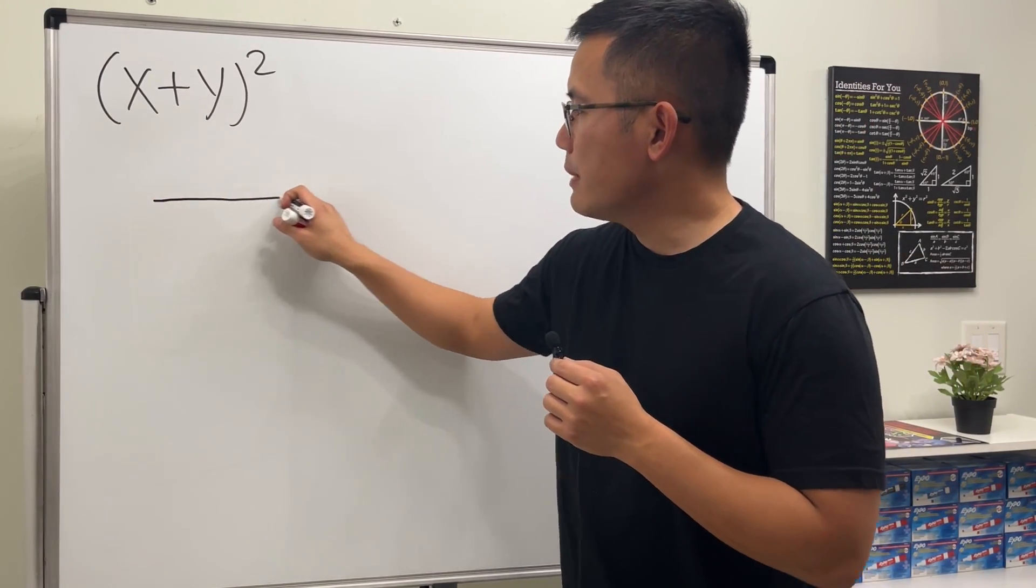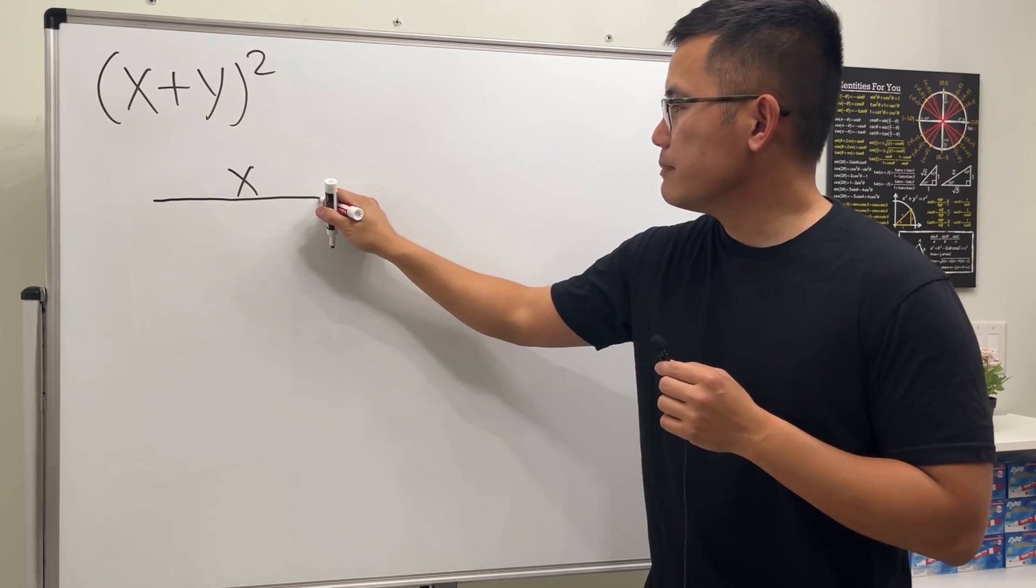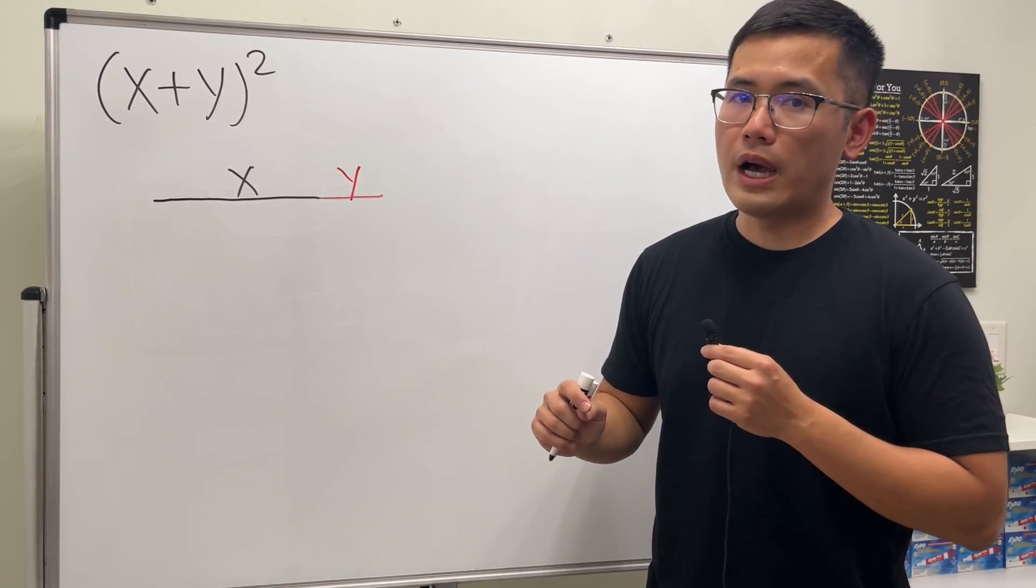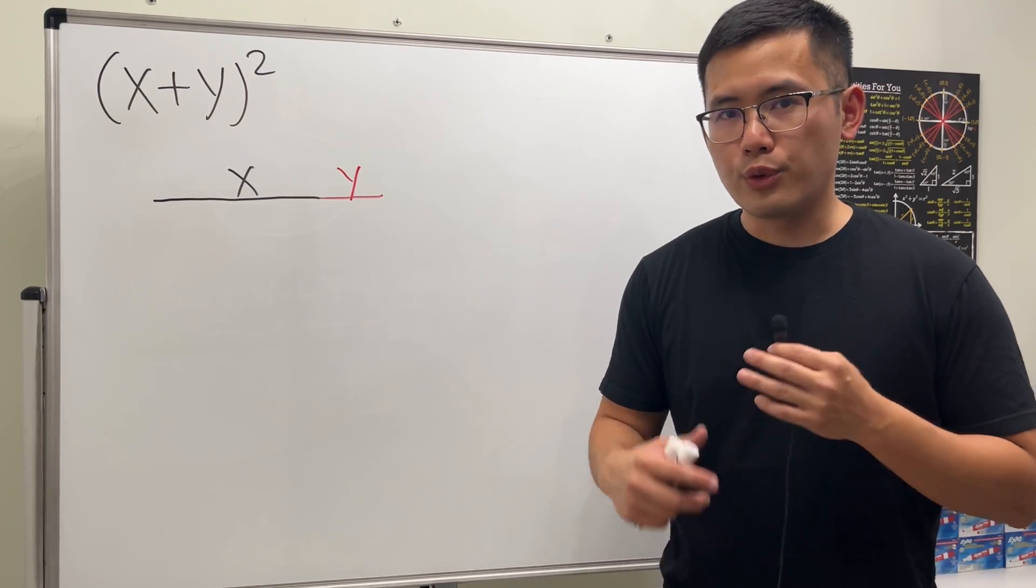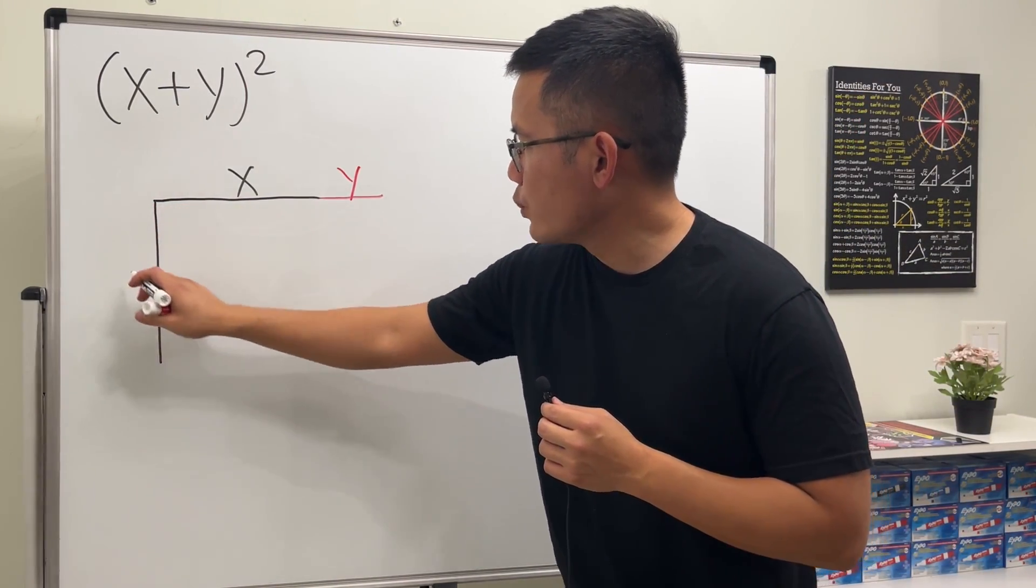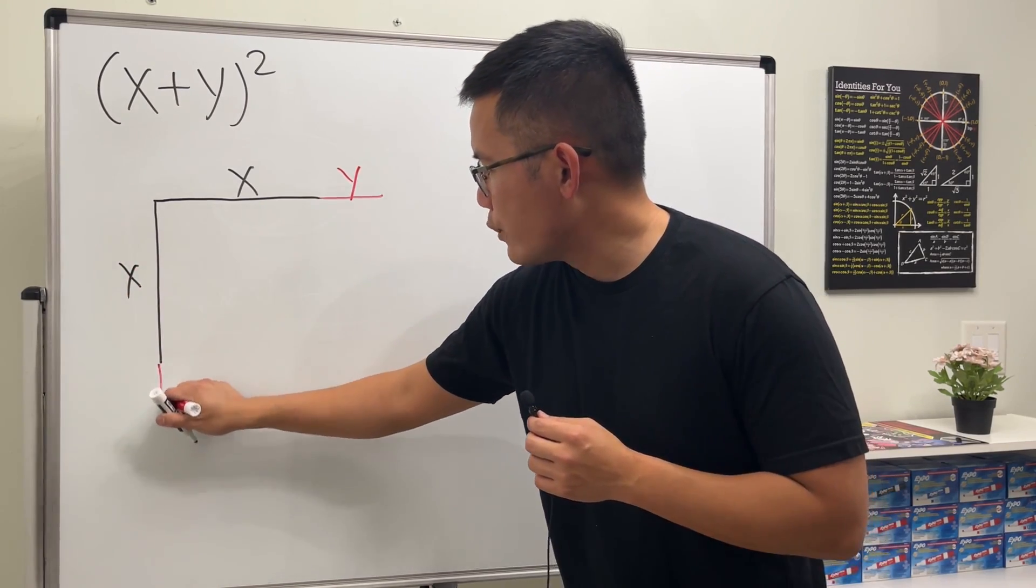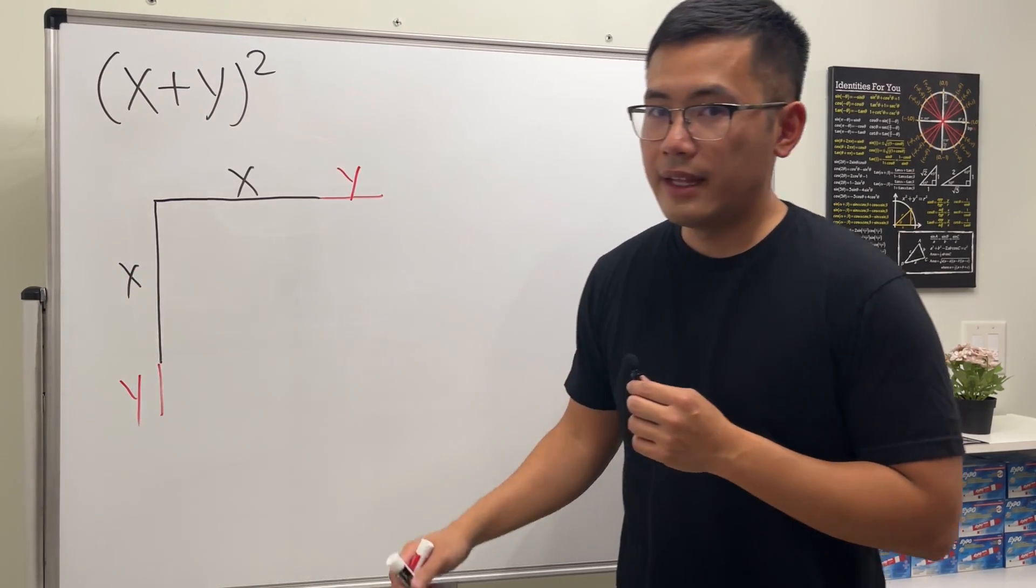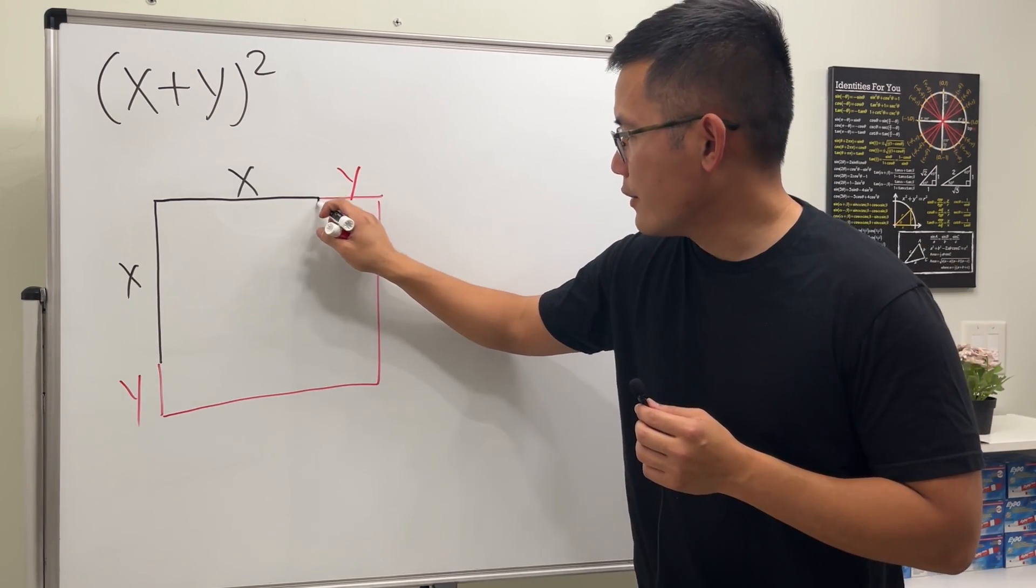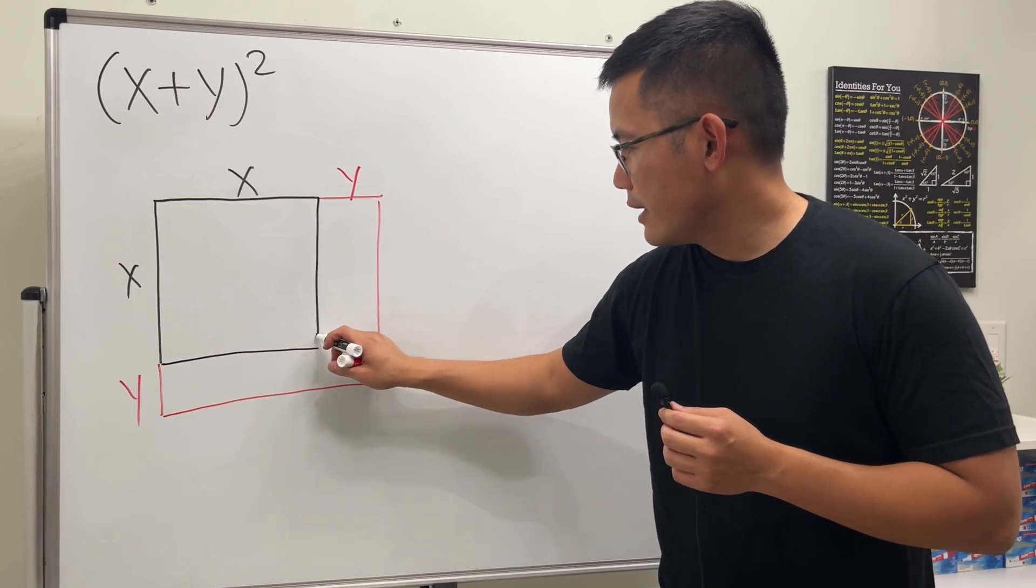Okay, to do x plus y square, first we're going to say this much right here is x and this much right here is y. So the whole thing is x plus y. And to square means that we are just going to get the area of a square. So right here let's put down x right here as well, and then also y right here as well. And then now let's just make a big square like so.